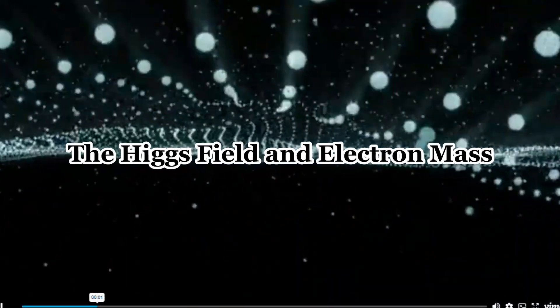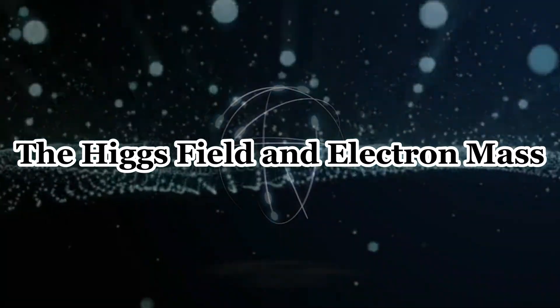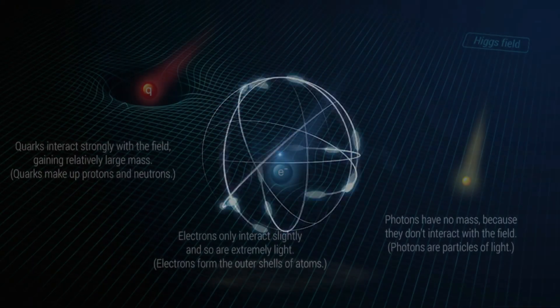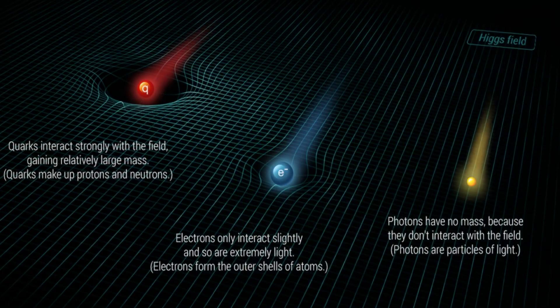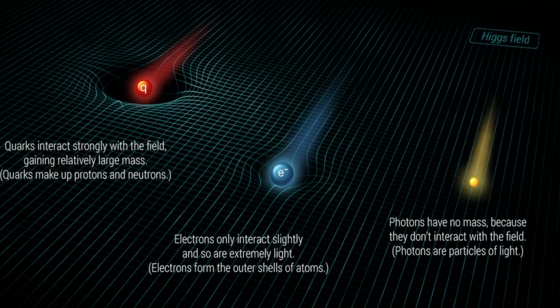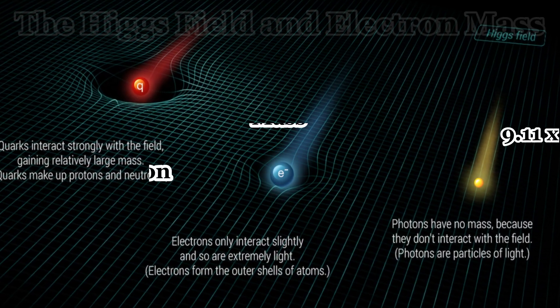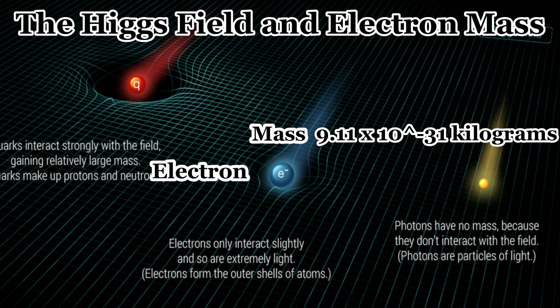The Higgs field plays a crucial role in imparting mass to particles, including the electron. Through interactions with the Higgs field, the electron acquires its mass.